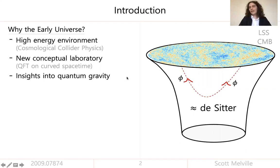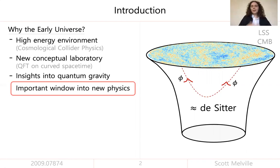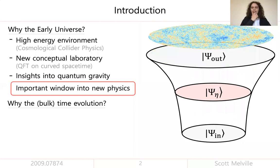Ultimately, whatever your take on this is, the early universe is an important window into new physics. In particular, what I want to do is study the time evolution of the state from the beginning of inflation to the end of inflation. Given that we only have direct access to this state at the end of inflation at the boundary, you might ask why I'm going to talk about how the time evolution in the bulk looks.